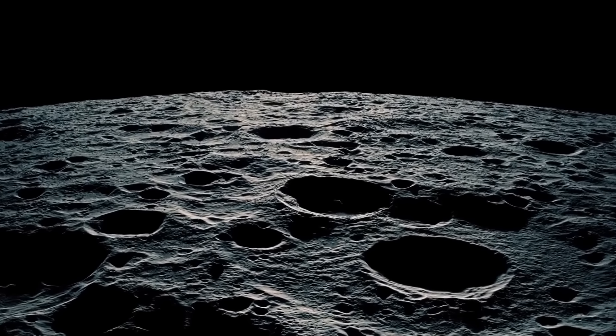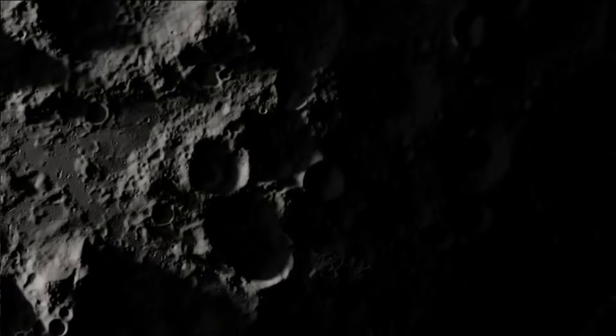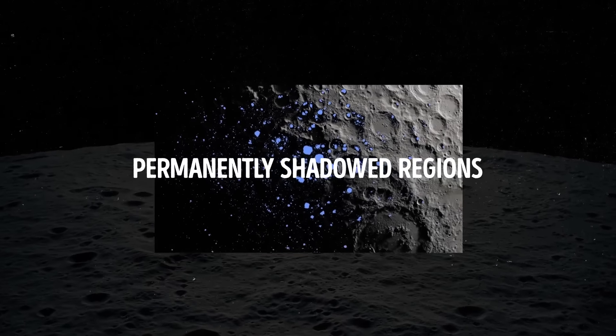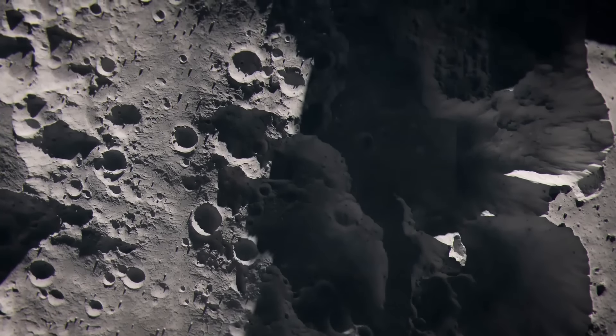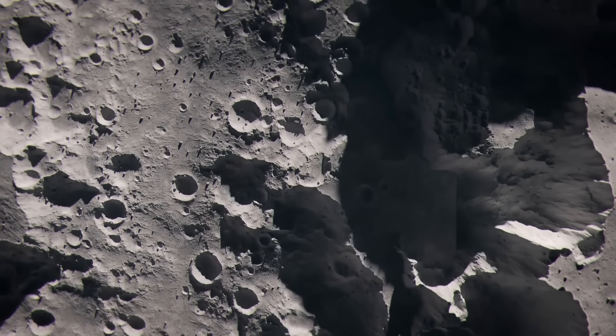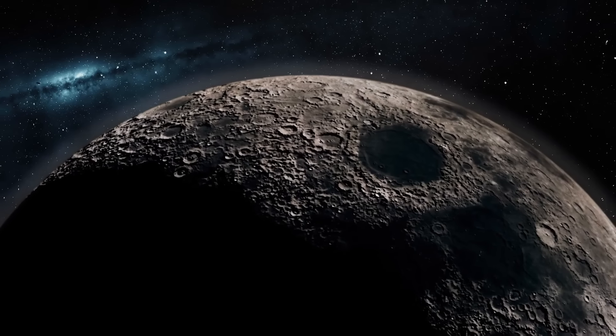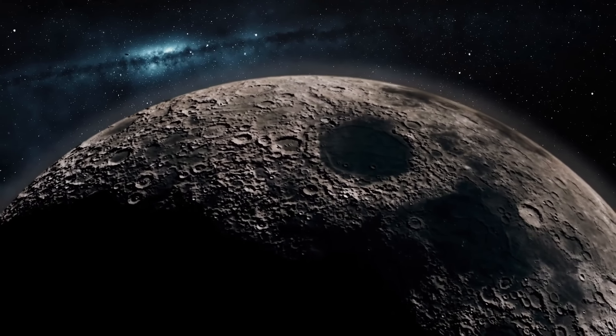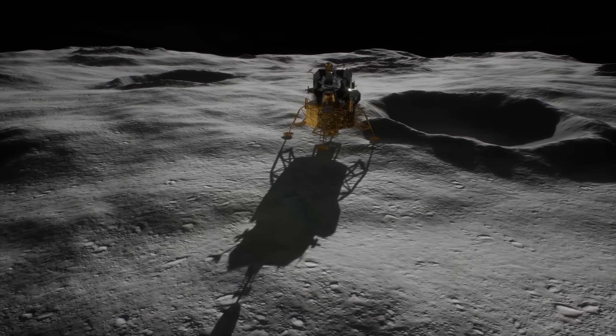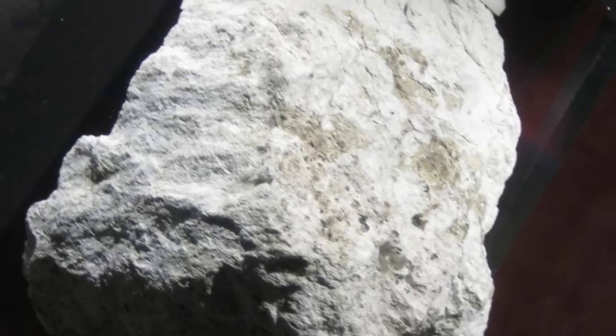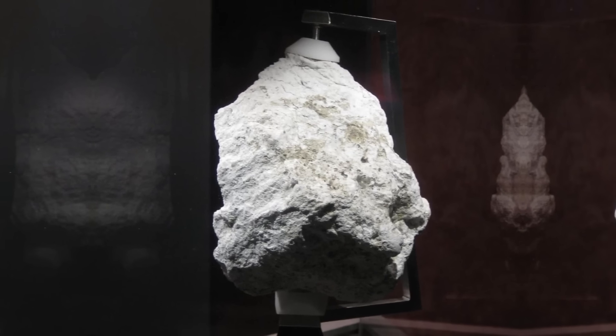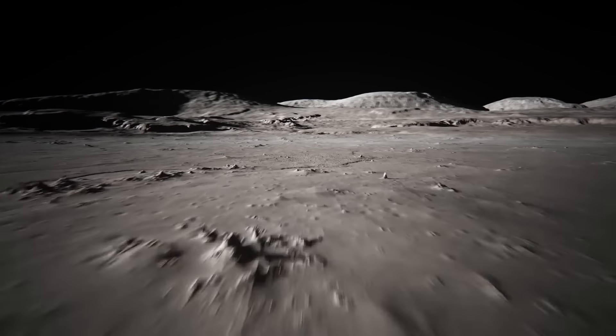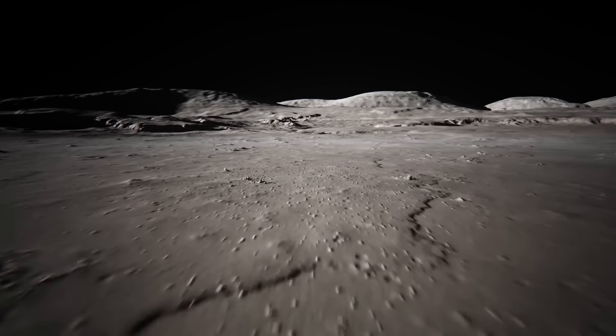So scientists thought that any water on the moon would just disappear right away. They believed the moon was totally dry. But then, in 1961, one physicist had a different idea. He pointed out there could be water on the moon in special areas called permanently shadowed regions. These are spots on the moon where the sun doesn't shine, so they stay dark all the time. Water ice could exist in these dark areas because they're extremely cold and the ice wouldn't evaporate. But when astronauts from the Apollo missions went to the moon, they brought back soil samples, and scientists found no signs of water in them. So everyone went back to thinking that the moon was completely dry.